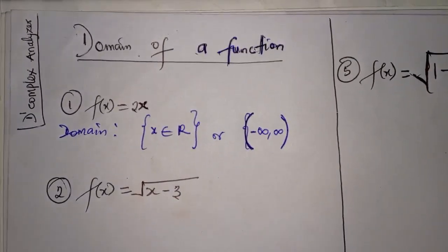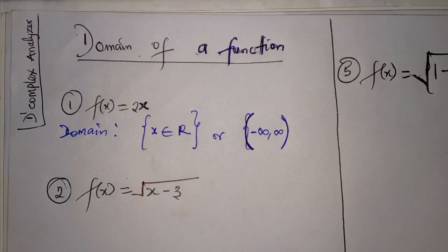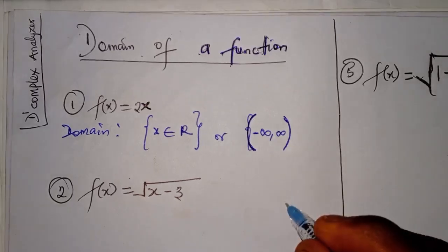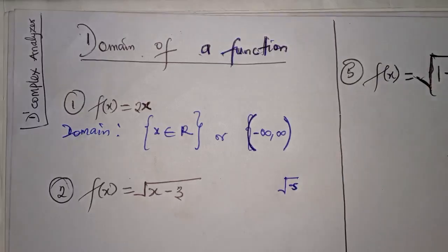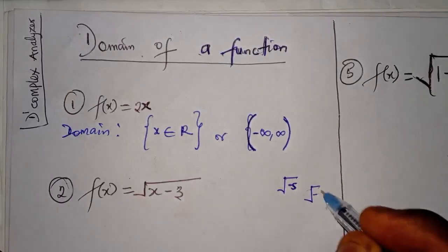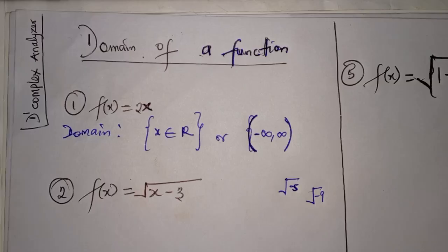For the second function, it has a square root. So there is a restriction, because a square root function is undefined whenever the number inside the square root is less than zero. Under the set of real numbers, the square root of minus 5 does not exist, the square root of minus 9 does not exist — though on complex numbers the square root of minus 9 is 3i. Any number that will not produce a real output value will be excluded from the domain.